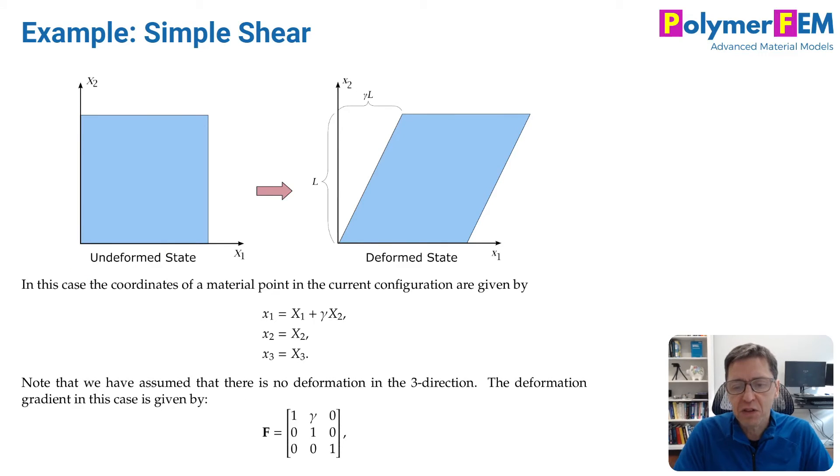To give you a concrete example, let's talk about simple shear. In simple shear, this square is sheared to the right like a deck of cards. The equations for the movement show that a point at capital X1 and X2 will be moved to lowercase x1 and x2. The coordinates are: x1 = X1 + γX2, x2 = X2, x3 = X3. This equation describes simple shear as a transformation.